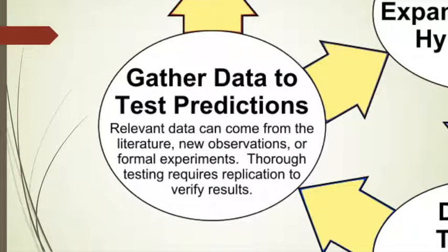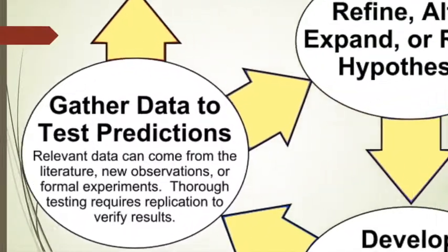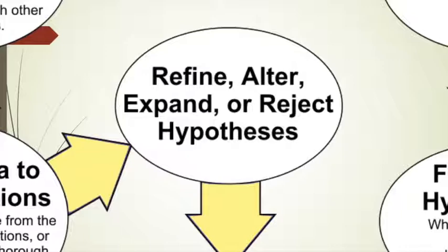Thorough testing requires replication to verify analysis. A very important aspect of the scientific method is that it has to be reproducible — other scientists have to be able to replicate our work in order to find the same things that we did. If we don't get the data that support our hypothesis, we have to move back through the scientific method and refine, alter, expand, or reject that hypothesis. We have to come up with a new explanation.